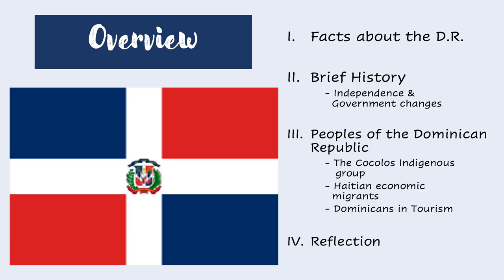This slide is going to be an overview of the presentation. The first part is going to be facts about the Dominican Republic. The second part will be a brief history of the colonization, independence, and governmental changes in the country. The third part will be about the peoples of the Dominican Republic — these are going to be my three in-depth topics. I will talk about the Cocolos indigenous group, the Haitian economic migrants, and the Dominicans in the tourism industry in the country.